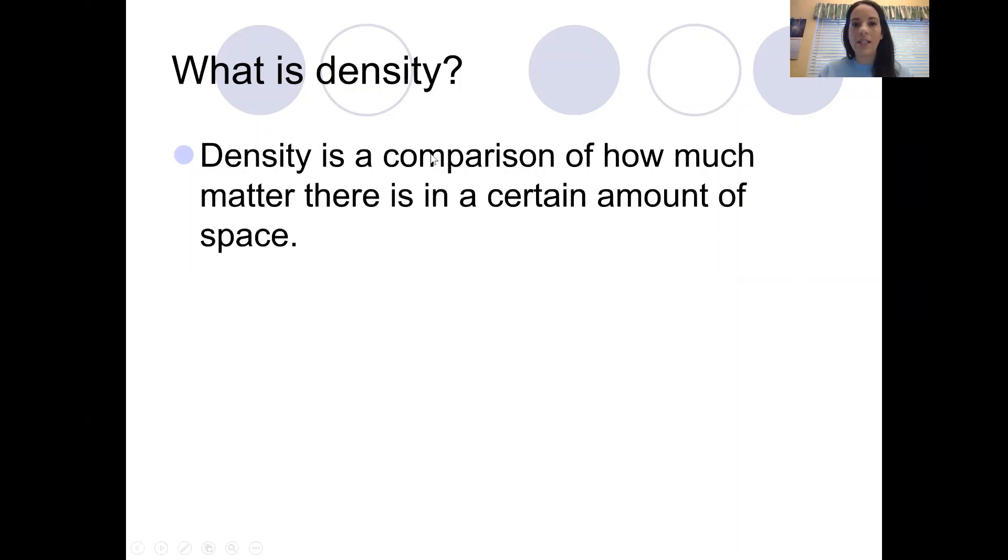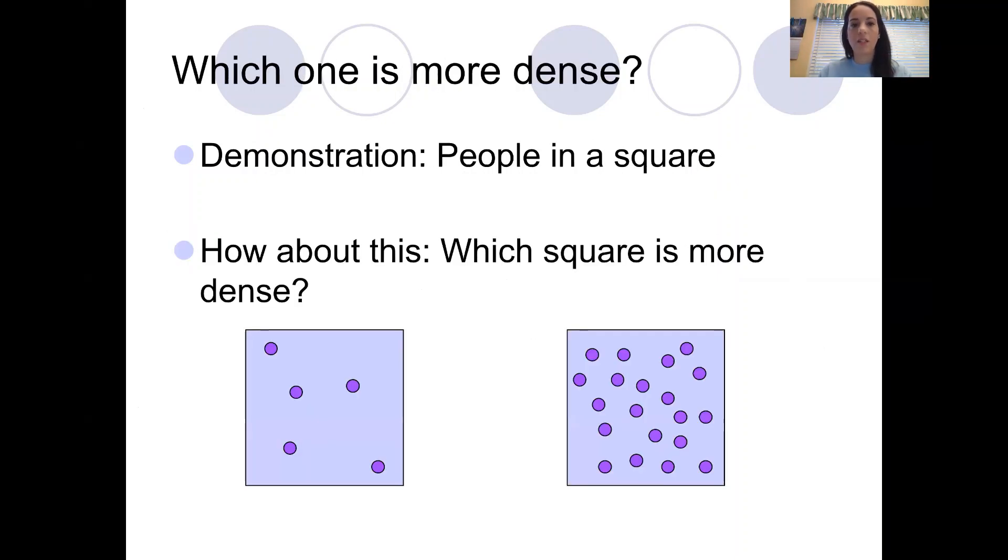Density is comparing how much matter or stuff is packed into a certain amount of space. If we look at these two squares, which one is more dense? Notice that these are just like the cubes. They have the same exact volume. This one is more dense because there's more stuff packed into the same space.